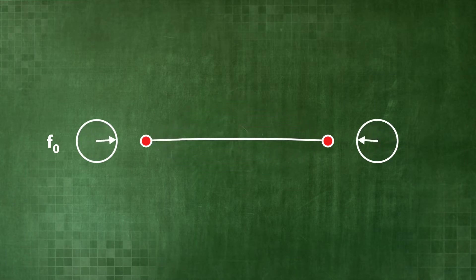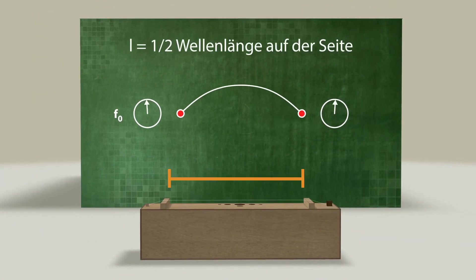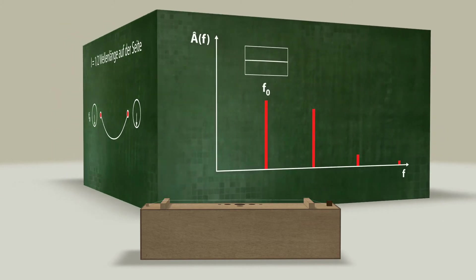This standing wave on the string, with the length L, is equivalent to one half a wavelength on the string. This is the vibration behind the fundamental tone with the frequency F0.